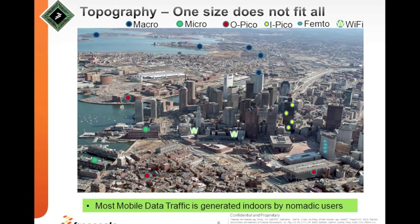There are microcells shown as green dots on top of smaller buildings, outdoor pico configurations, and indoor pico for high-rise buildings ensuring effective coverage for voice calls and data users. There are also femtocells, probably in apartments, where people want their own private wireless network access. And of course, ubiquitous Wi-Fi is also part of the deployment — a big network of Wi-Fi access points in the city.